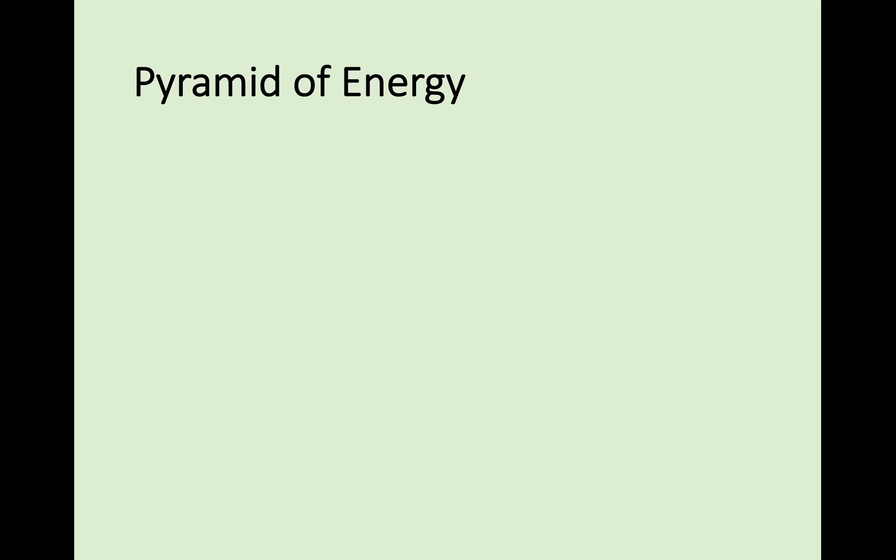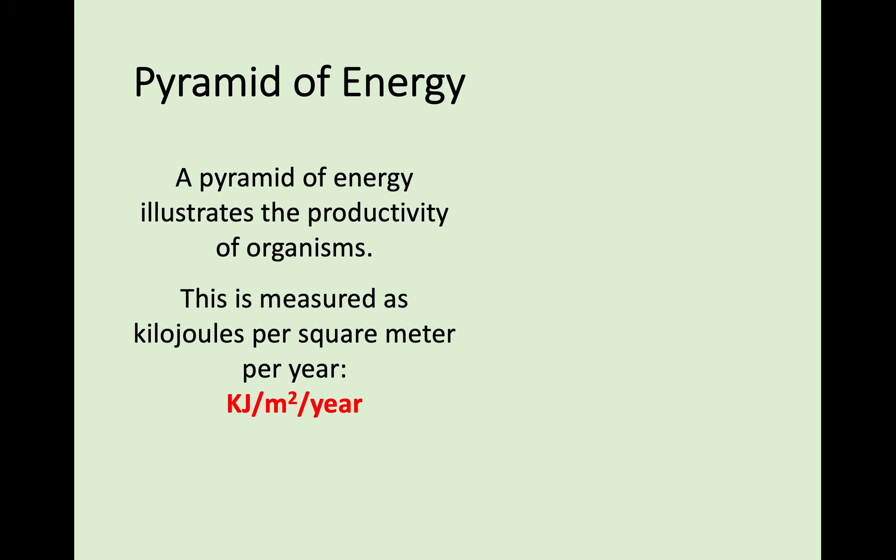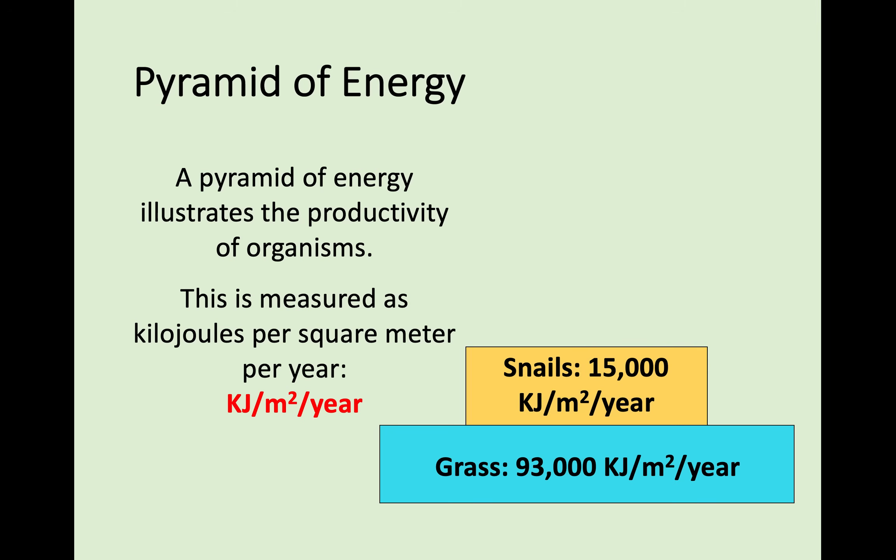The second type of pyramid works in exactly the same way, but it's just working on energy. A pyramid of energy illustrates the productivity of organisms—the amount of energy being produced by those organisms. This is measured as kilojoules per square metre per year. For example, going back to grass, you could see there's 93,000 kilojoules per square metre per year being produced. From the consumers and those snails, there might be 15,000 kilojoules per square metre per year produced. And above then, you could have 1,200 kilojoules per square metre per year being produced by the birds. It is decreasing as you go up the levels in the food chain, or as you go up the blocks in the pyramid. You're able to see, at a glance, how much energy is being produced by each level of the food chain.